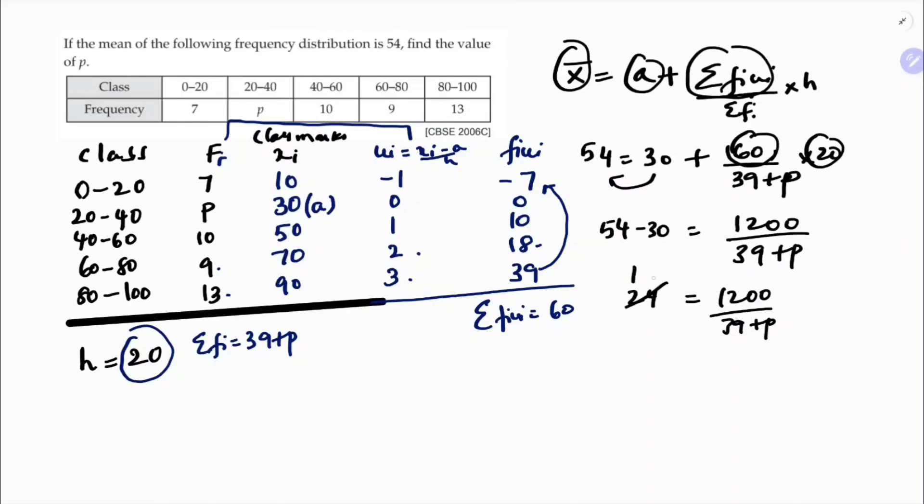If we will cancel this, 24 once, 50. So if we will cross multiply, 39 plus p is 50. So p is 50 minus 39. So the value of p is 11. So the missing frequency, p value is 11.